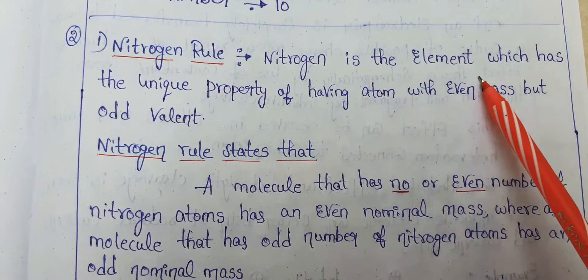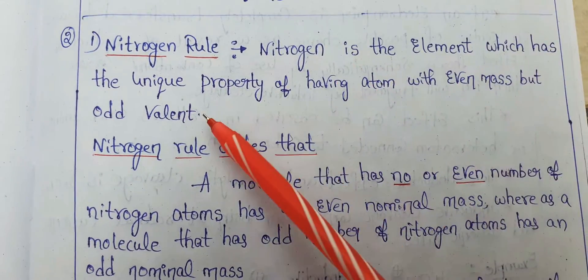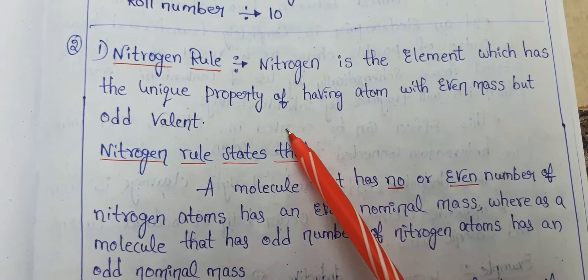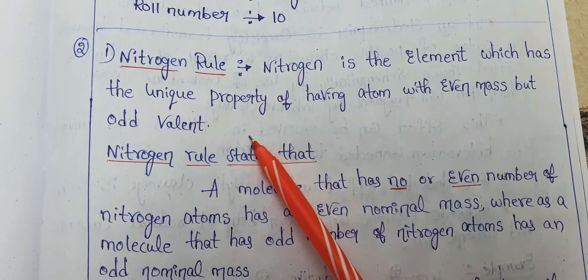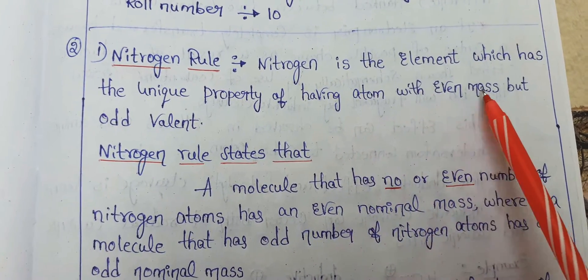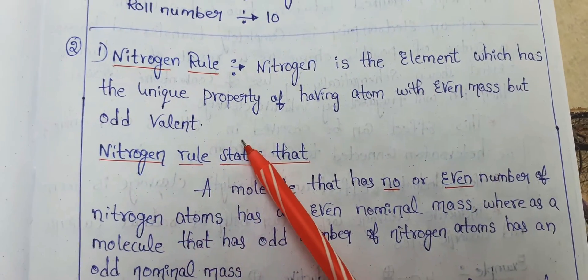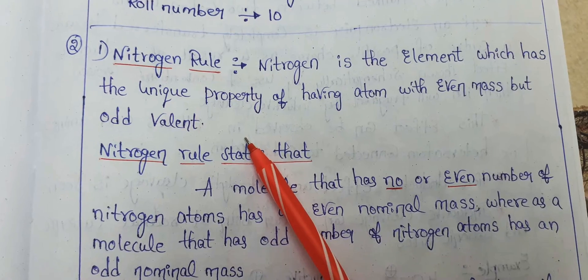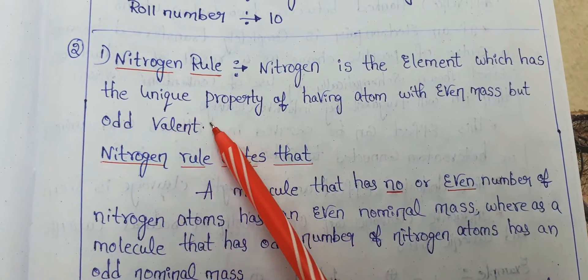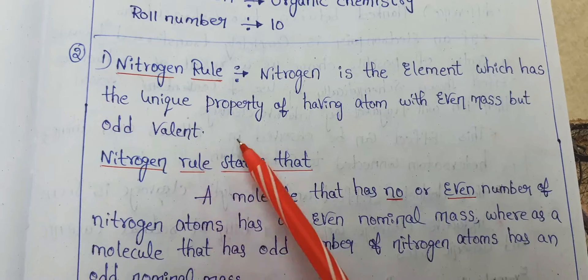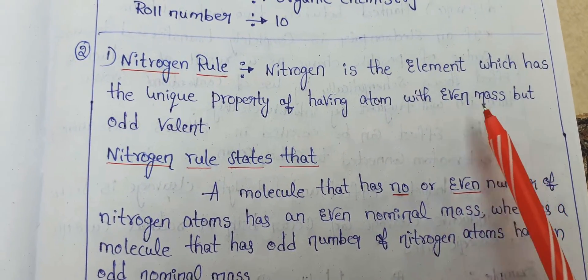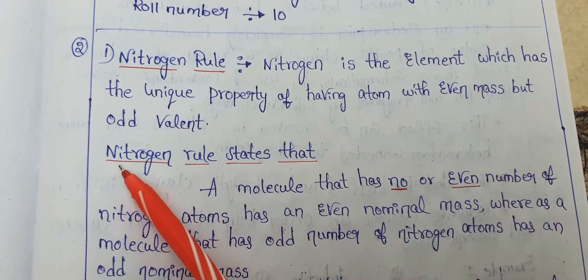Nitrogen is an element with a unique property. It is an atom with even mass but odd valence. The atomic number of nitrogen is 7, so its valency is odd. The mass number of nitrogen is 14, so it has even mass but odd valency.